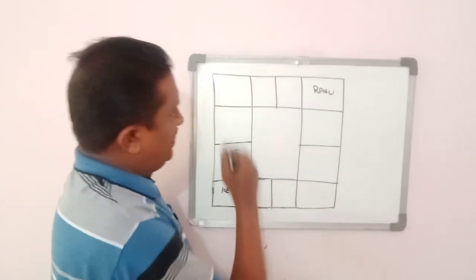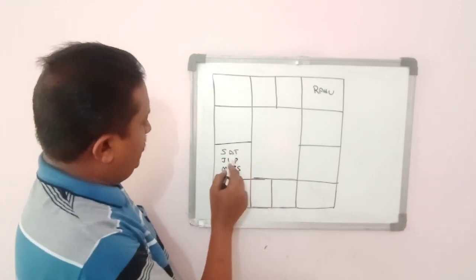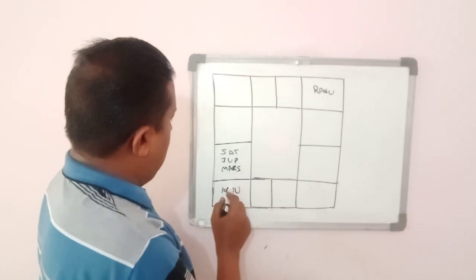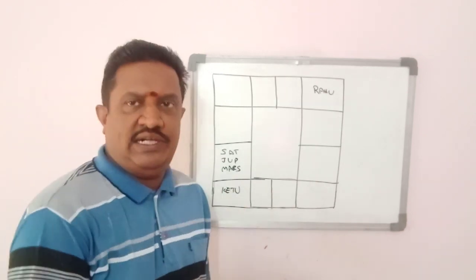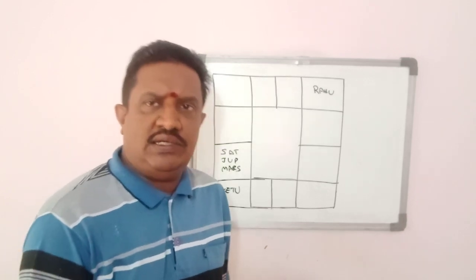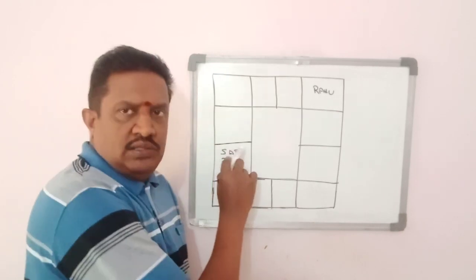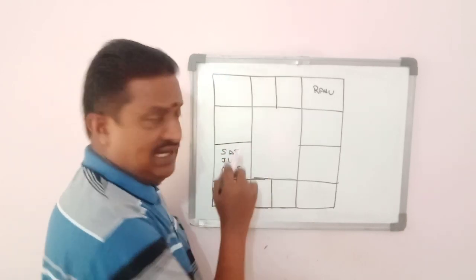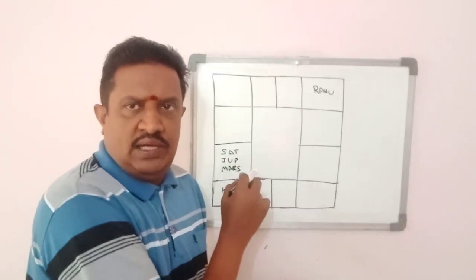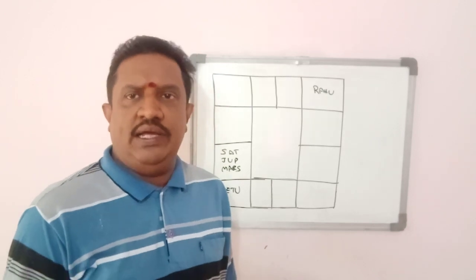If you look at the current planetary position of the major planets, right now Saturn, Jupiter and Mars are in Capricorn, and Rahu is in Gemini and Ketu is in Sagittarius. There is a fundamental dictum in Mundal Astrology that whenever Saturn transits earthy signs like Taurus, Virgo and Capricorn, there will be a hit of epidemic in the whole world.